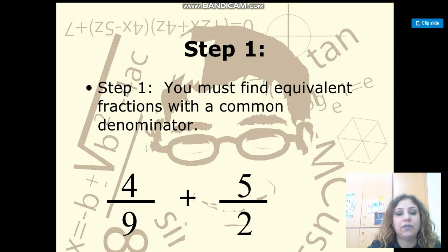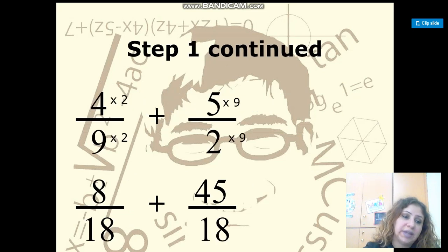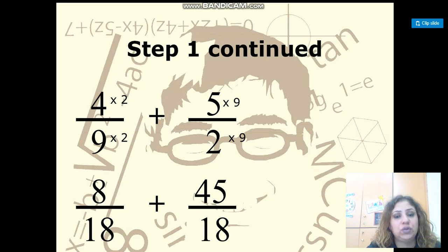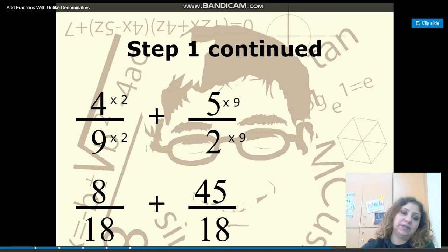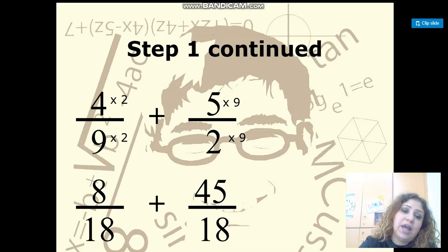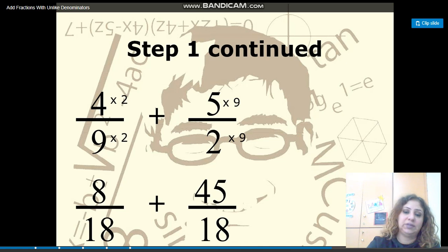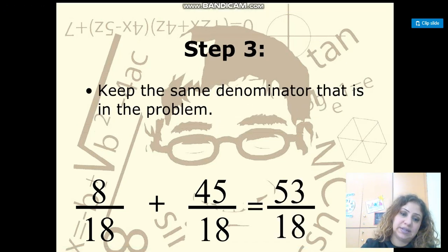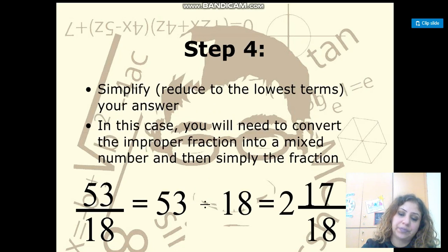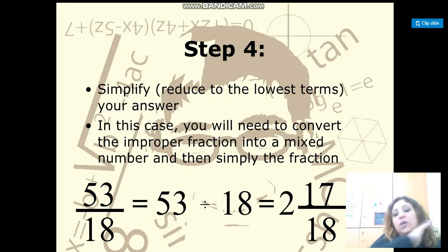Next example: 4 over 9 plus 5 over 2. Find the common denominator by listing the multiples of 9 and 2. You will find the common denominator is 18. Change 9 to 18 by multiplying by 2, and multiply the numerator by 2 also. Change 2 to 18 by multiplying by 9, and multiply the numerator 5 by 9. I get the equivalent fractions: 8 over 18 plus 45 over 18. Add the numerators to get 53 over 18. To simplify this improper fraction, divide 53 by 18 using long division.